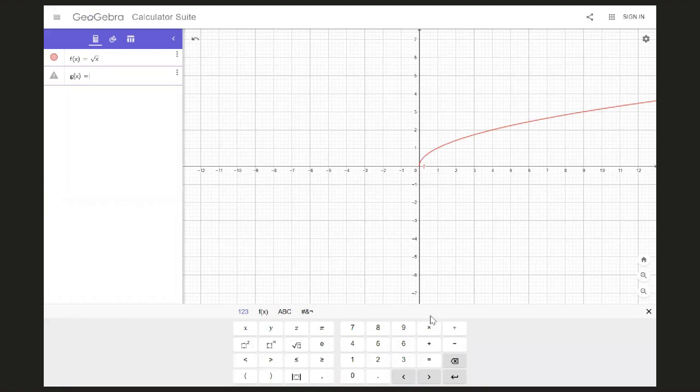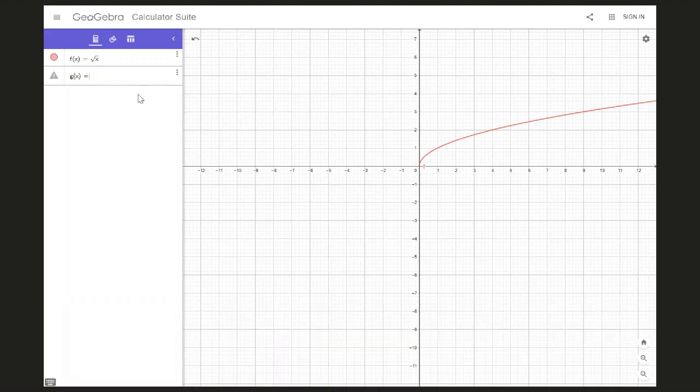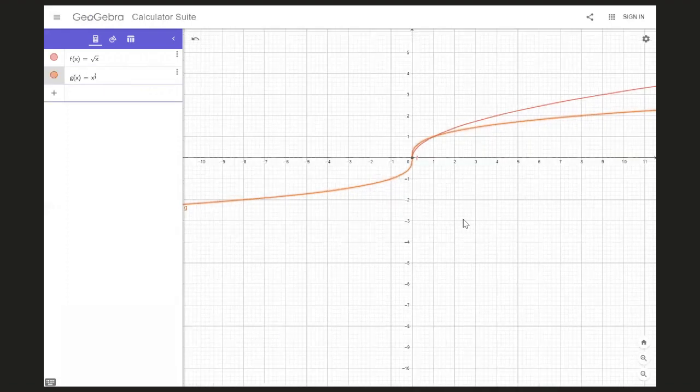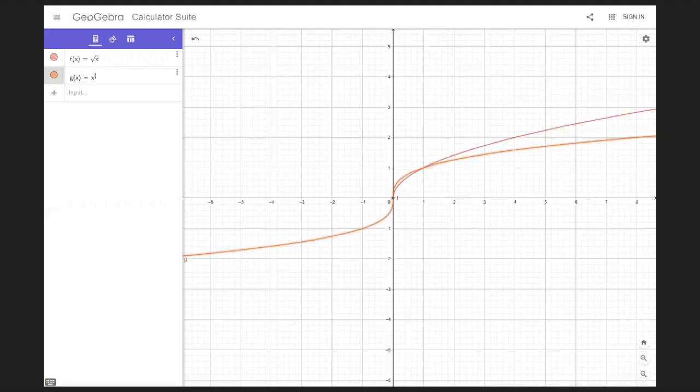GeoGebra doesn't have a nice convenient way to enter this as a radical, so I'm going to enter it as x to the power of one third, which is the same thing. So I have my two graphs.